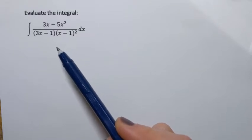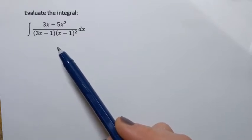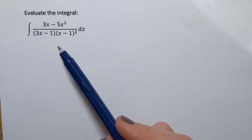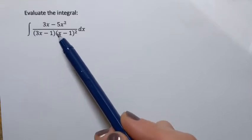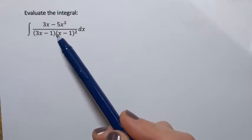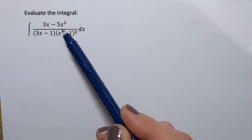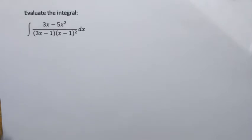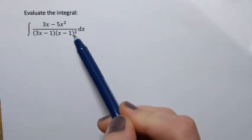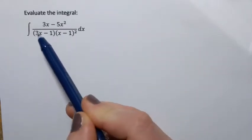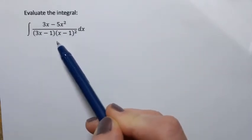Before we perform partial fraction decomposition, we want to confirm that the degree of the numerator is less than the degree of the denominator, and that's true. In this case, the numerator is of degree 2 and the denominator is of degree 3.